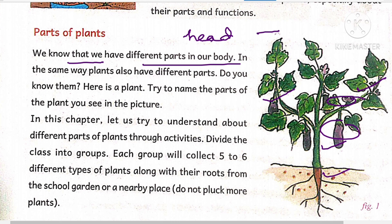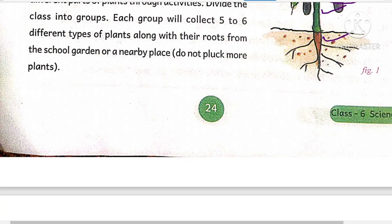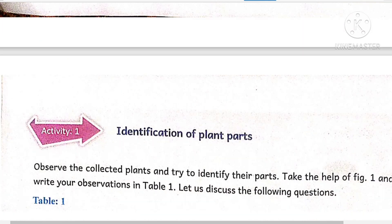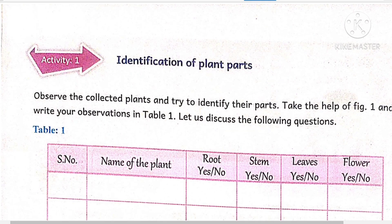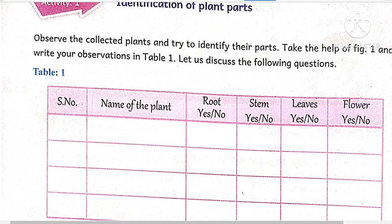In this chapter, let us try to understand the different plant parts through some activities. Divide the class into groups, and each group will collect five to six different types of plants along with their roots, because we are going to learn about the different types of root systems. But do not pluck or remove too many plants from the soil.